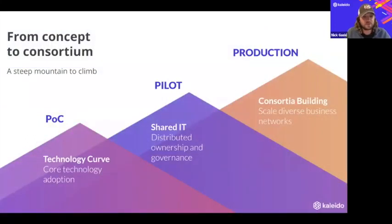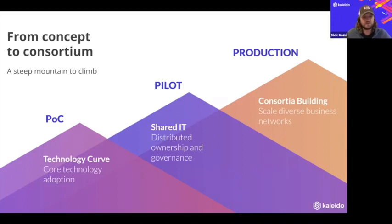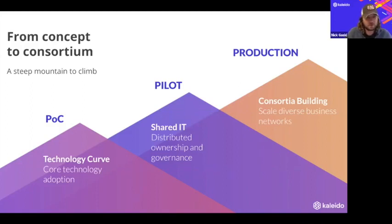Our approach with Kaleido and with blockchain in general has really been to try to flatten the curve and allow people to quickly progress from an idea, from a concept, from that POC phase, all the way into production. There's a lot of challenges along the way — just wrapping your head around this new technology with peer-to-peer protocols, smart contracts, new transaction interaction methodologies, and all of this cryptography. As you progress into a pilot, into production, you need to easily decentralize your network, bring on participants, allocate governance and permissioning. And in production you have this imperative need to sustain high throughput, add or remove members, and know that the underlying infrastructure is going to meet the needs of your business network.